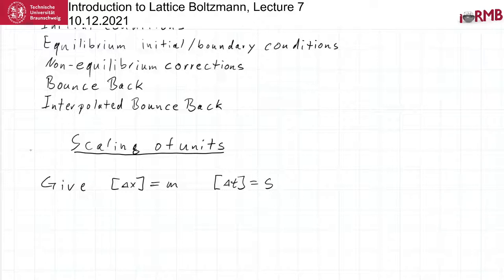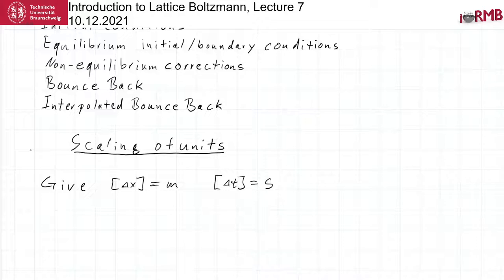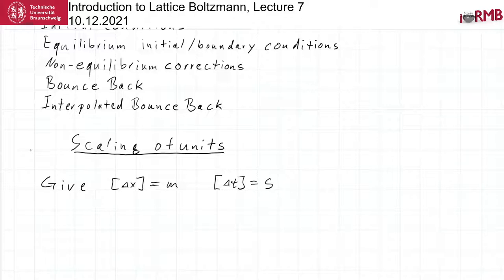In other numerical methods, it may be possible to simulate in terms of physical units, but you should never do this, because physical units may be very inappropriate from the point of view of round-off errors. You should always ask yourself what is the best scaling of your variables to keep numerical errors low. In Lattice-Boltzmann, the time step and the grid spacing are always regarded as one in the units used in the method.